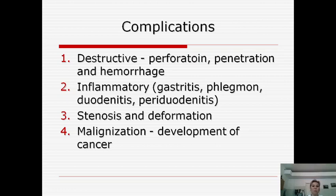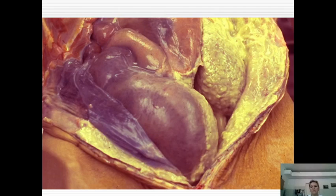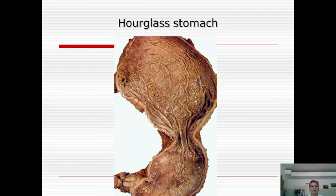The third complication group is stenosis — through many years we see rough sclerosis, resulting in deformation of the stomach and possibly stenosis of the stomach or duodenum. The last group of complications is malignization — development of cancer, known as ulcer-cancer, occurring after many years. In photos you can see: complications of bleeding and hemorrhage, peritonitis after perforation, deformation, and the so-called 'hour-glass stomach' as a result of rough scarring and deformation.